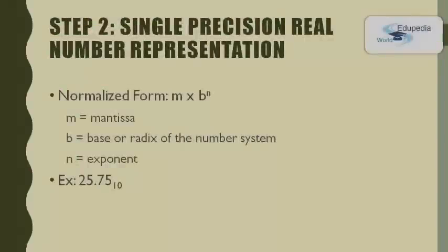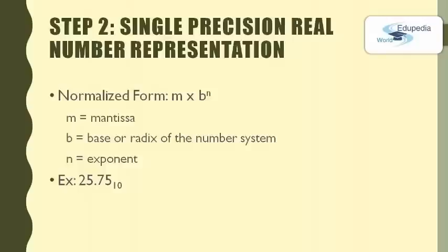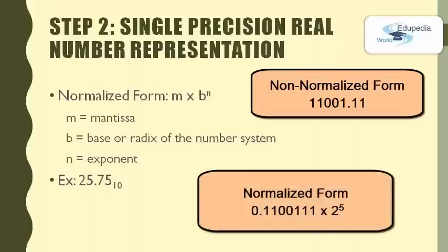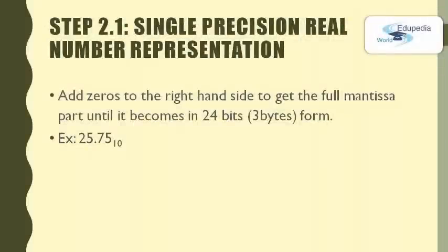Step 2: Rearrange the number in its normalized form. Normalized form of representation is M × B^N, where M is the mantissa and must be in the range 1/B to B, B is the base or radix of the numbering system, and N is the exponent. For our example 25.75, the non-normalized form is 11001.11. Written in normalized form it becomes 0.1100111 × 2^5. The mantissa part is 1100111, the base is 2, and the exponent is 5. The mantissa part is now ready.